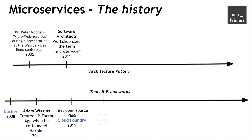There was also a framework developed in the same year called Vert.x, or Node.x as it was initially known, before it transitioned into Vert.x. This is another popular microservices framework leveraged for building microservices-based architecture with various interoperable languages.